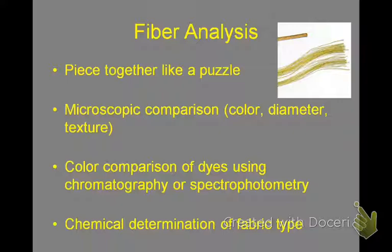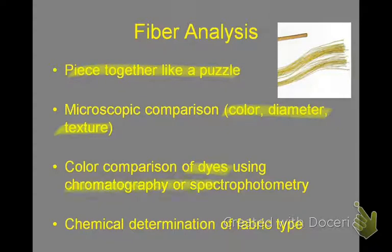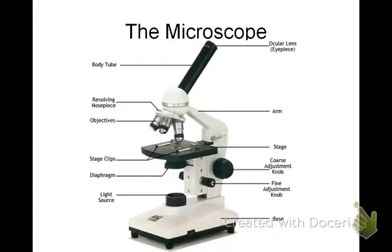Different ways that fibers can be analyzed: if it's a torn piece of fabric, you can piece it together like a puzzle. You can look at color, diameter, and texture under the microscope. You can also look at the dyes and compare them using chromatography or spectrophotometry. What we're going to do in class is a chemical determination of fabric type — a qualitative analysis. More about that tomorrow.